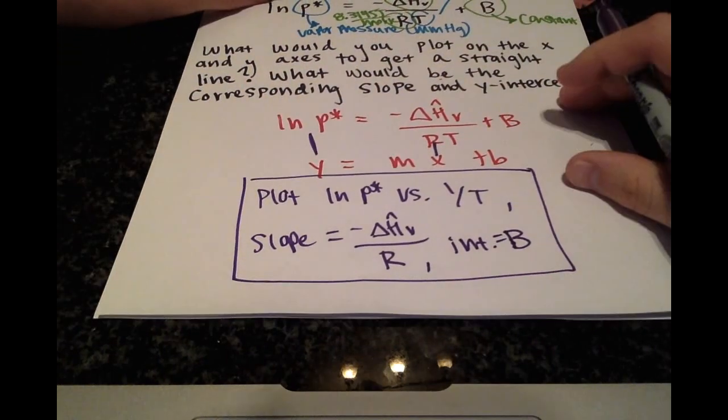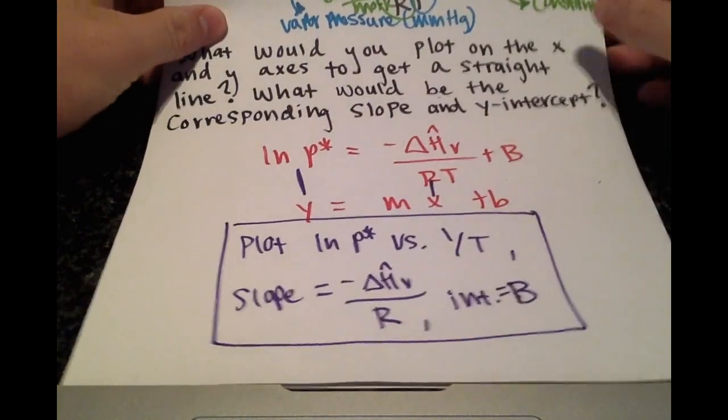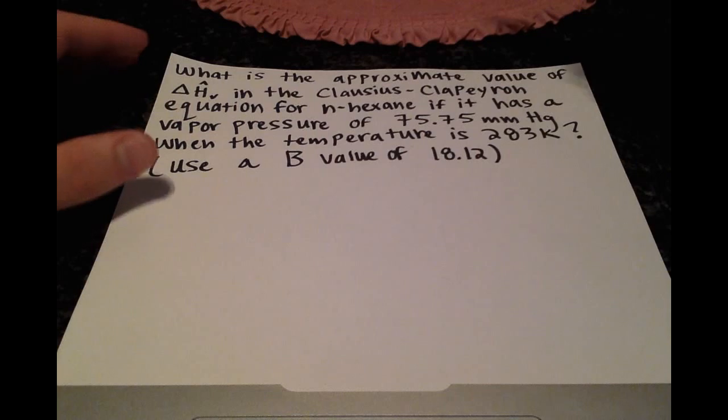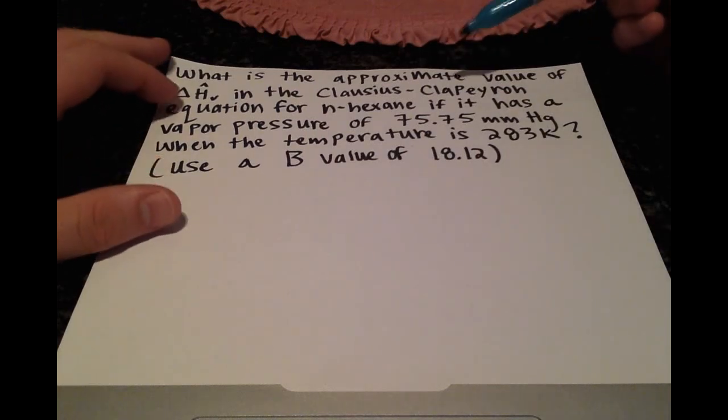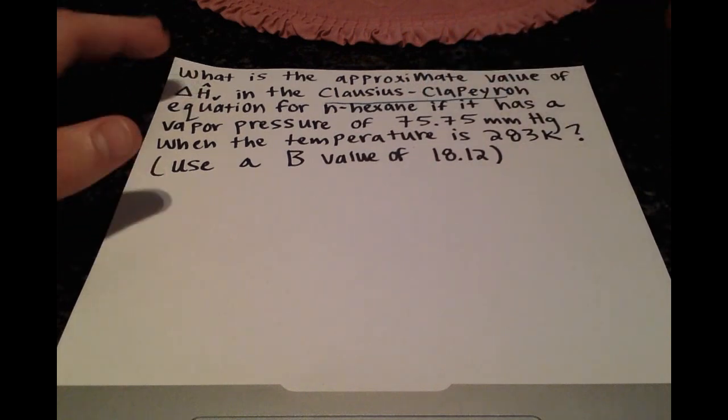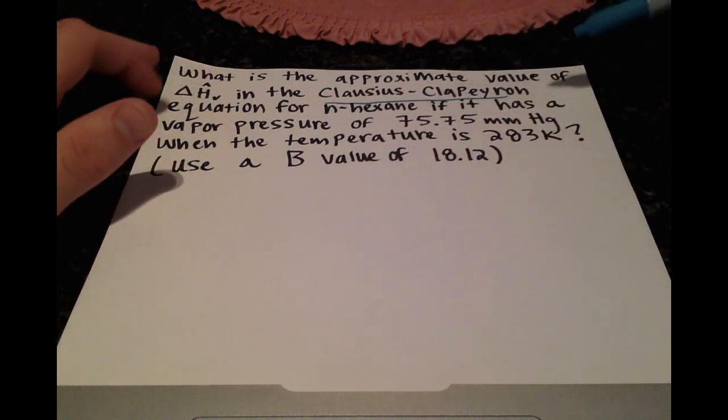Okay, so now let's actually look at the Clausius-Clapeyron equation with some numbers involved. All right, so for this problem, we want to approximate the latent heat of vaporization in the Clausius-Clapeyron equation for n-hexane, and we are given some values.